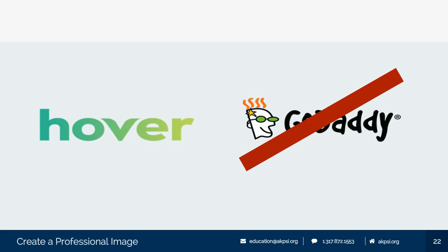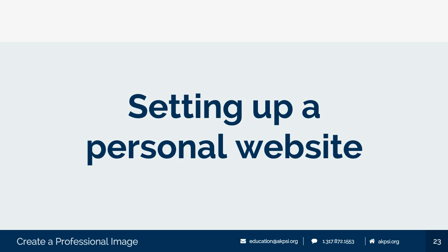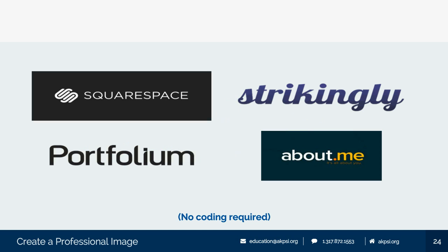Now that you've bought your own dot-com, I want you to not just let it sit there — I want you to actually set something up and put something there. It's 2016 and you can use sites like Squarespace, Portfolio, Strikingly, or about.me because they don't require any actual coding. All of these have a free tier except Squarespace, which is about $8 a month. If you go to ColbyGoodman.com, that's actually built with Strikingly.com and took me a couple of hours. It has examples of me speaking, a bio, and testimonials from workshop attendees.